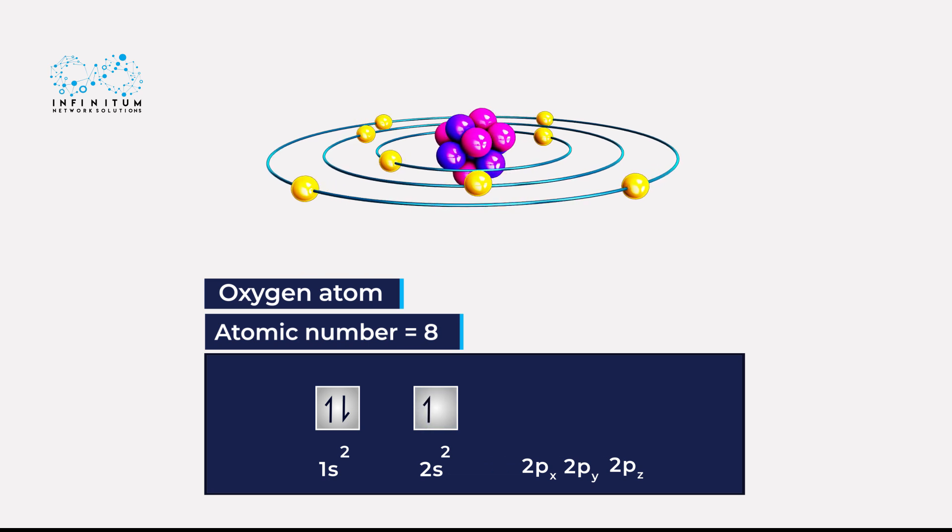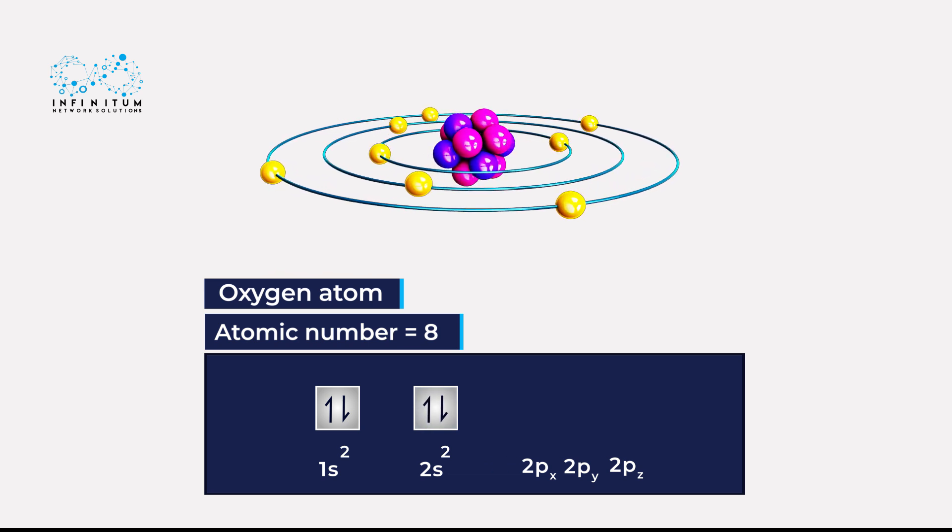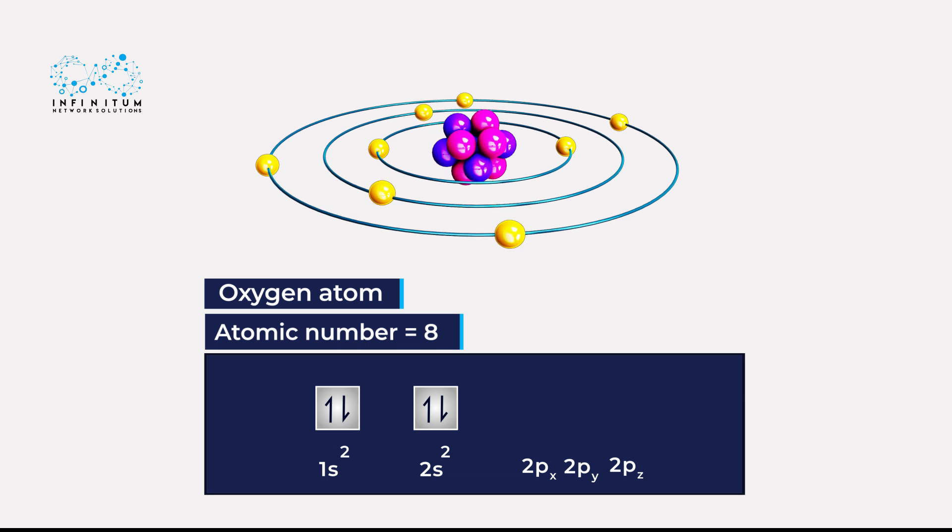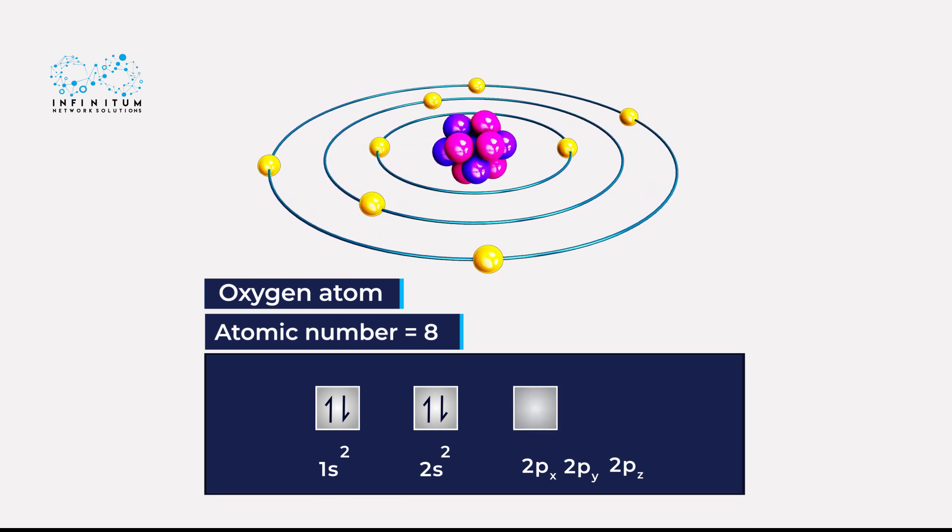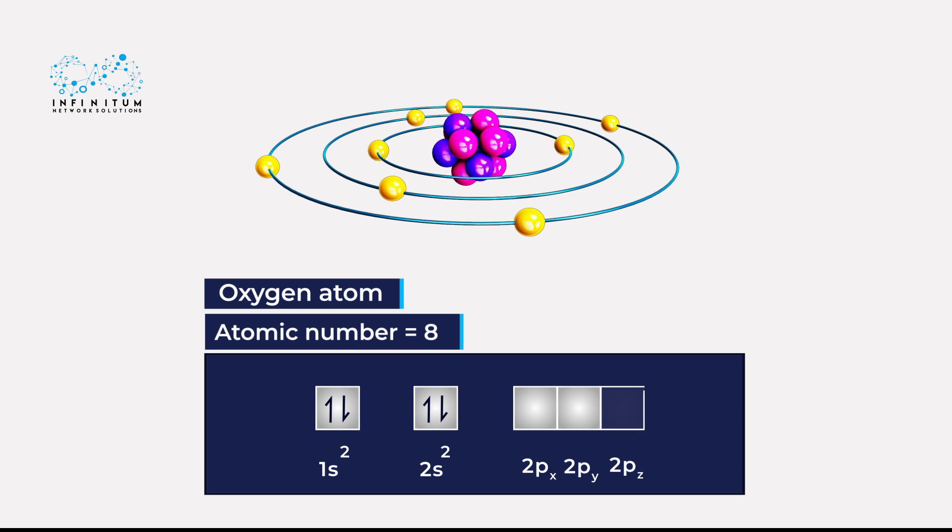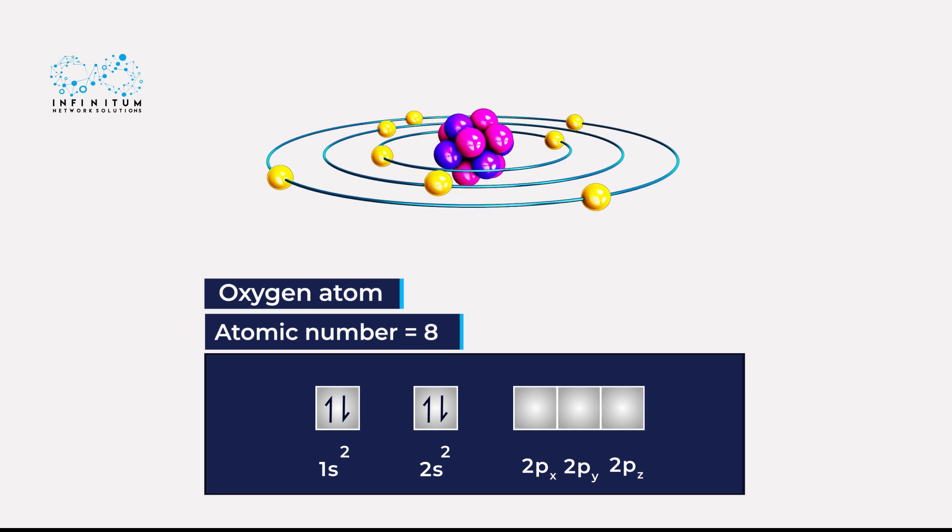Similarly, the third and fourth electrons will occupy the 2s orbital of the L shell. The fifth electron goes into one of the three 2p orbitals of the L shell.